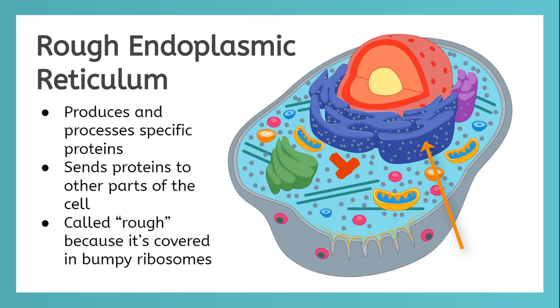The other endoplasmic reticulum is called the rough endoplasmic reticulum. It is rough because it is covered with bumpy ribosomes. These ribosomes make specific proteins that are then transported in small sacs called vesicles.